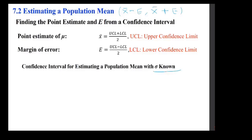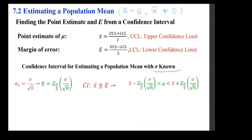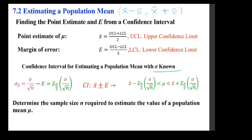When sigma is known, we use the z-table. The formula becomes x-bar ± E where E = z-alpha/2 × sigma / sqrt(n). To determine sample size, solve for n: n = (z-alpha/2 × sigma / E)². Square both sides of the margin-of-error formula and isolate n.